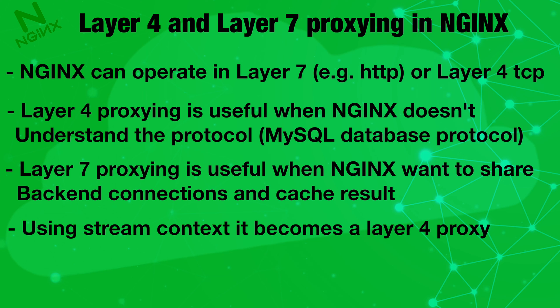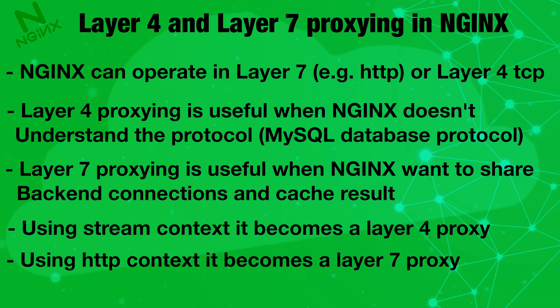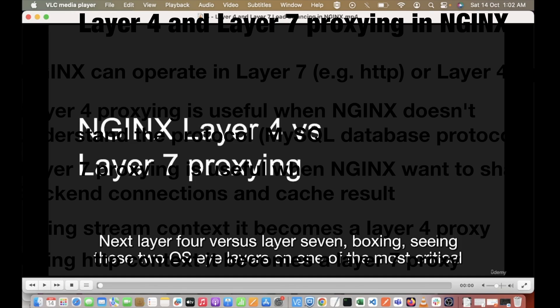Using the stream context, nginx becomes a layer 4 proxy — meaning it passes connections and data as-is, without any modification, reading, or caching. When using the HTTP context, it becomes a layer 7 proxy. This is how nginx can work at both layer 4 and layer 7.